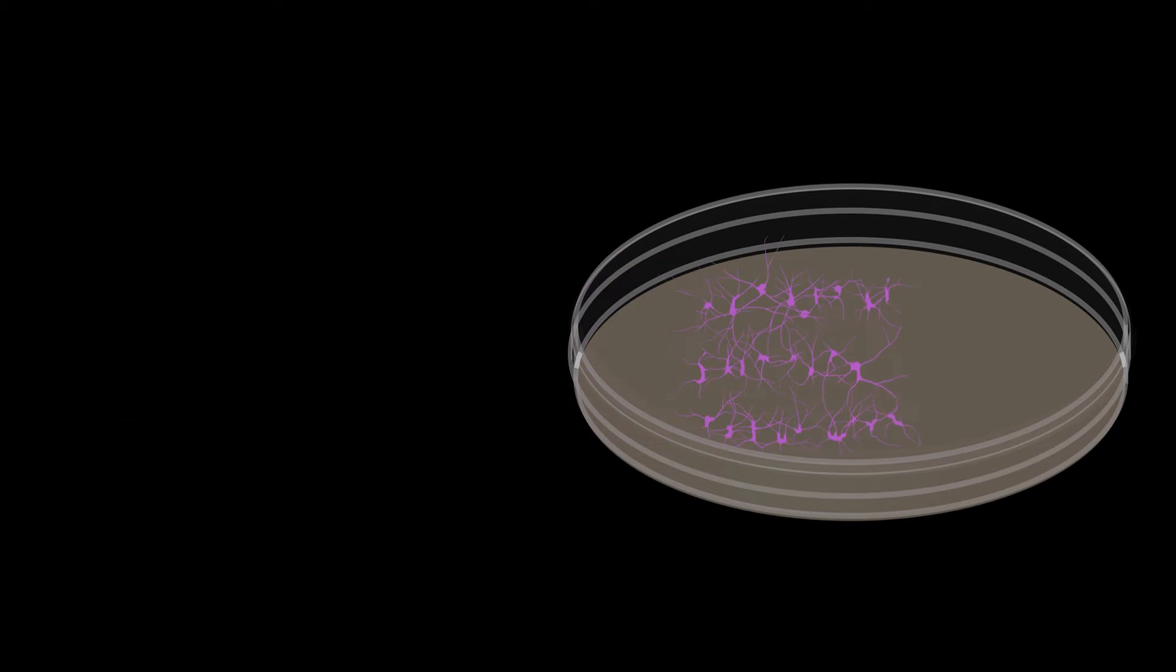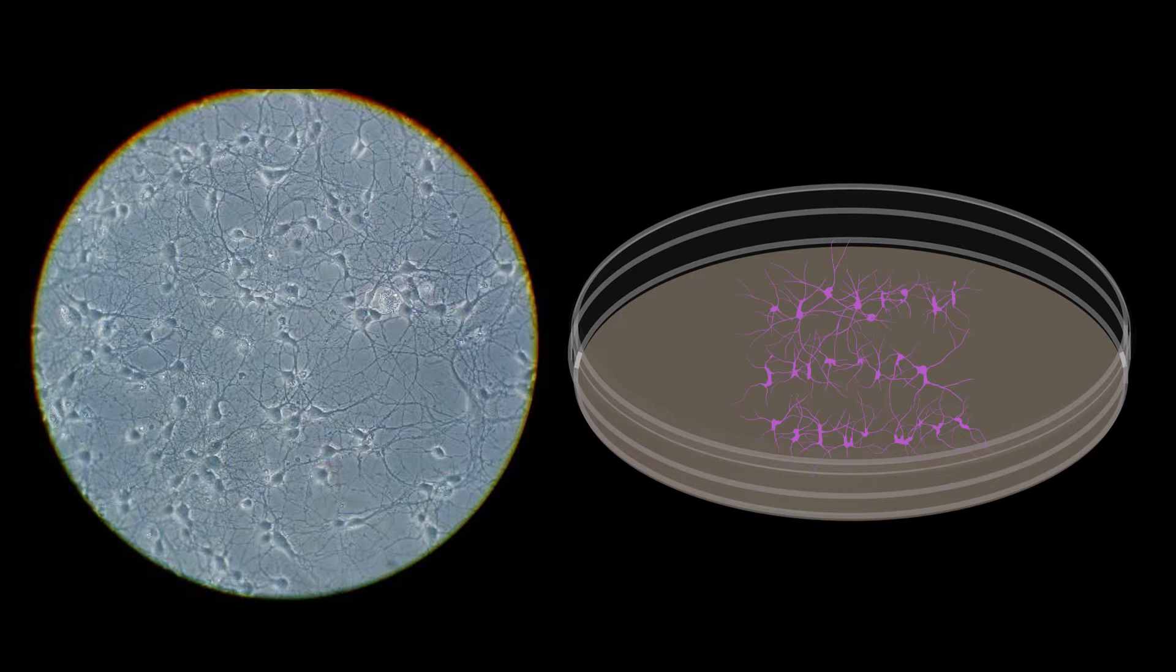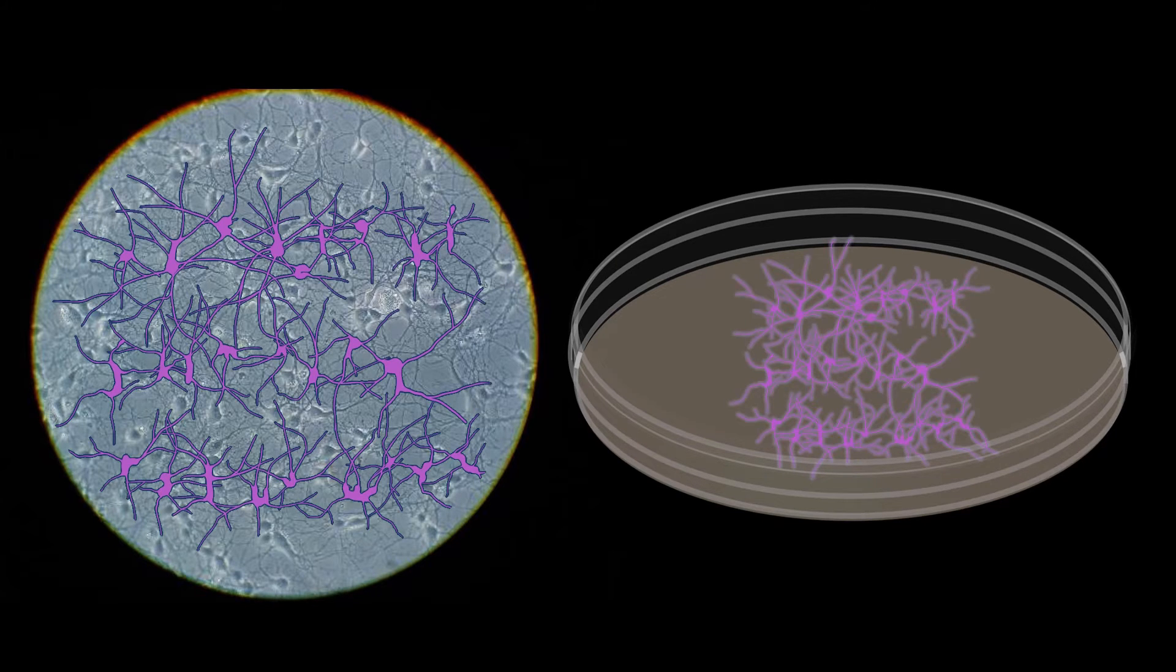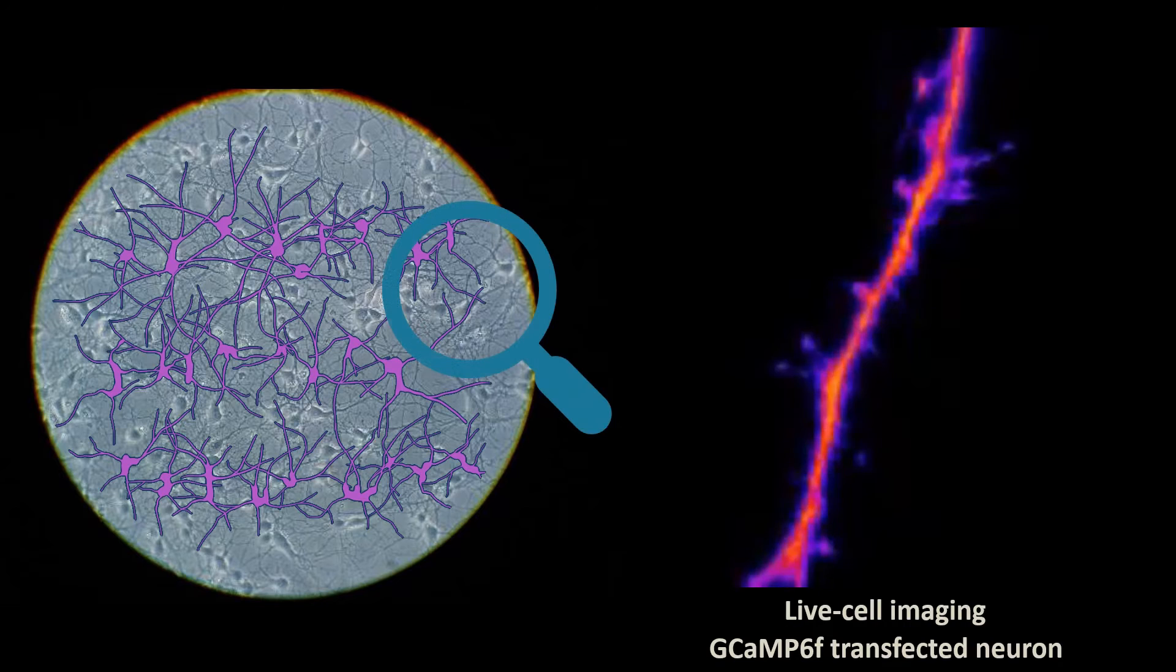we use a simplified brain model of neurons in a dish, which allows us to easily introduce sensors of synaptic activity to monitor synaptic plasticity of individual spines by measuring the amount of light these sensors emit.